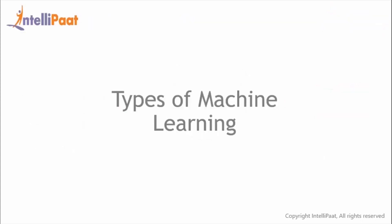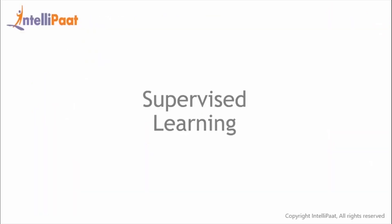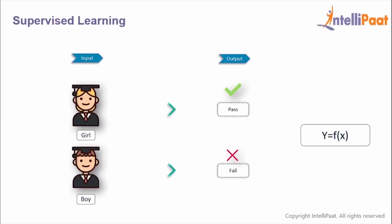Now that we've understood what exactly is machine learning, let's have a look at the different types of machine learning algorithms. Broadly speaking, we have supervised and unsupervised machine learning algorithms. Let's start with the first one and understand what exactly is supervised learning.